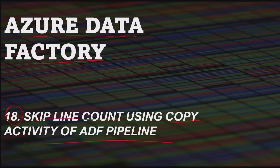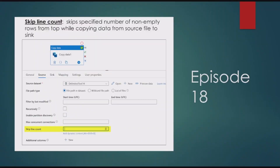When your requirement is to copy data from a delimited text file in ADLS or blob storage to some other location, you have the option to use skip line count in the source settings, where you can specify the number of rows starting from the top that you don't want to load into the sink file. Basically, the skip line count option skips a specified number of non-empty rows from the top while copying data from the source file to the sink.